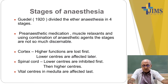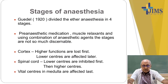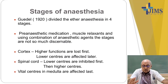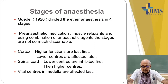Now we come to the stages of anesthesia. The person who classified the stages was Guedal in 1920, and he made his observations and stagings by seeing the effect of ether. Later on, with pre-anesthetic medication, introduction of muscle relaxants, and using combinations of anesthetic agents, these stages are not so discriminable. When general anesthetics act on the cortex, the higher functions are lost first and the lower centers are affected later. In the spinal cord, reversely, lower centers are inhibited first and then higher centers. Vital centers in the medulla are affected last.